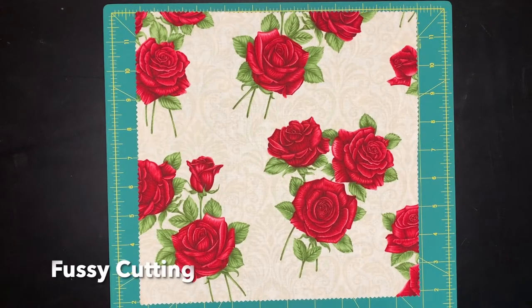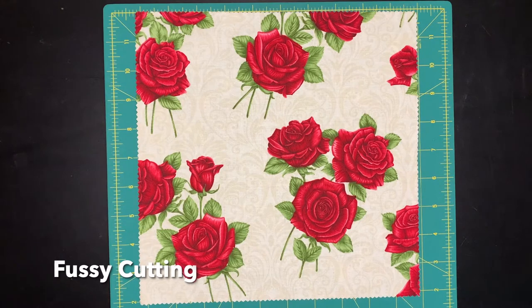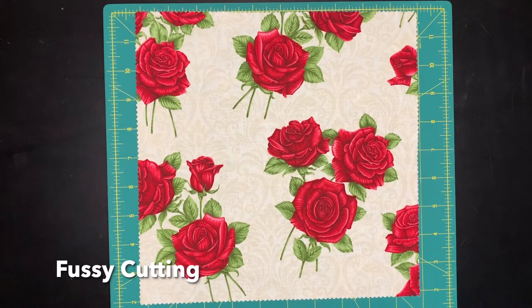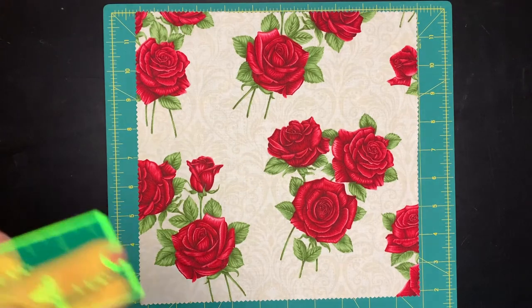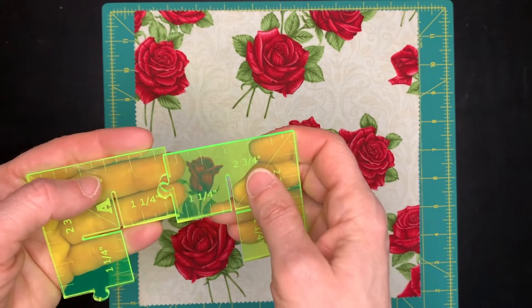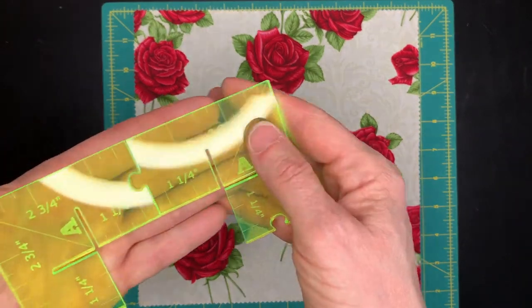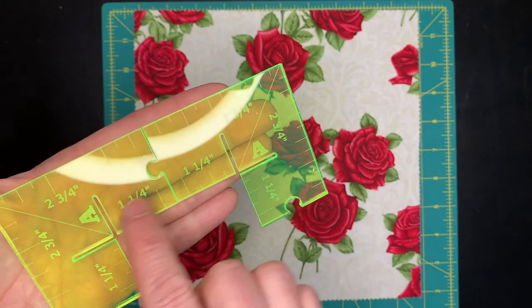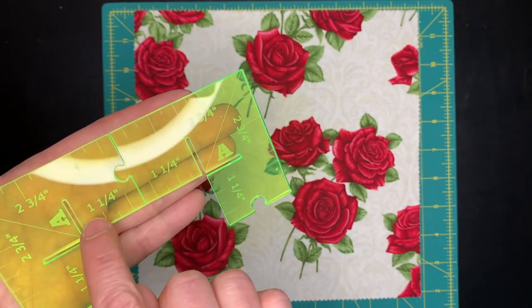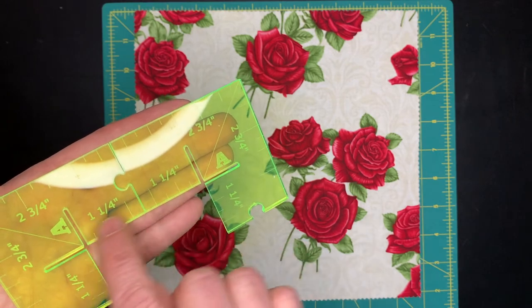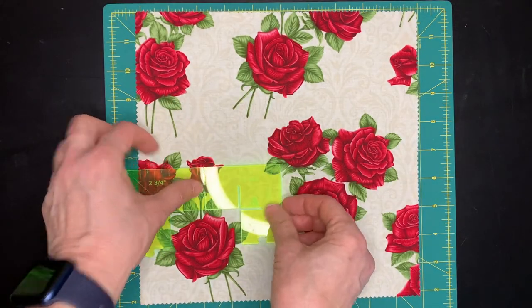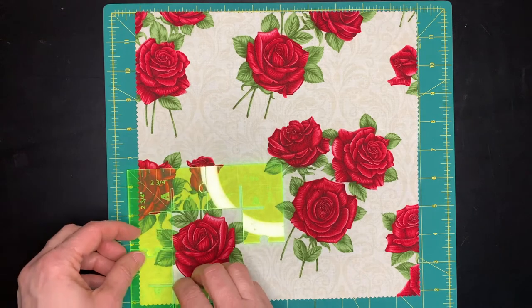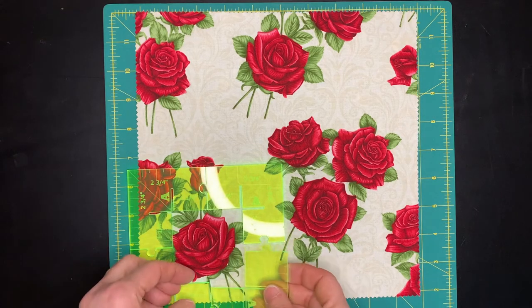Sometimes you want to fussy cut a perfect rose out of a piece of fabric or whatever design you're working with. So in this case, we could do a two and a half inch block by putting together two of the A pieces because in the center it's one and a quarter inches. So two of those is two and a half inches. So we put four A blocks together and we have two and a half inch square in the middle.